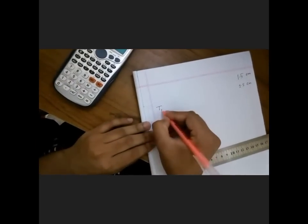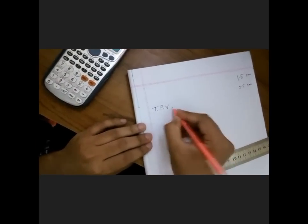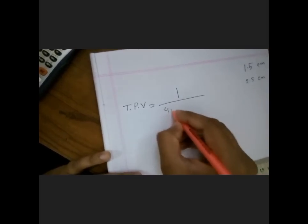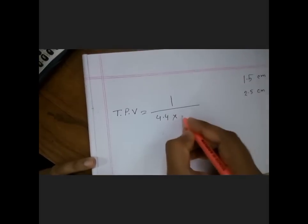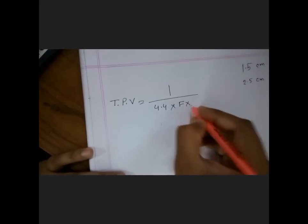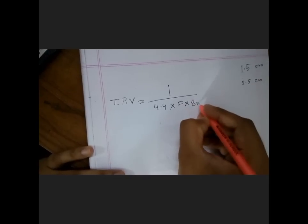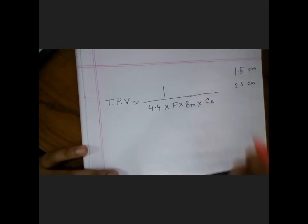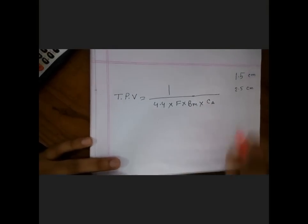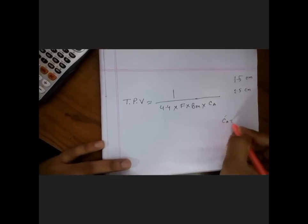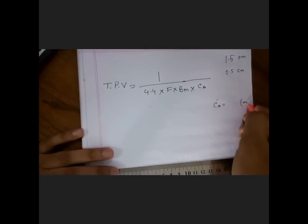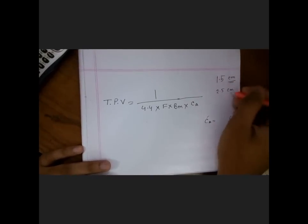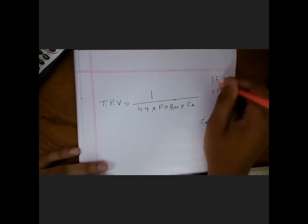And the law is, I'll write here: turns per volt equal to 1 by 4.4 into F into BM into core area. Remember the core area should be taken into meters square. Remember it's meters, but we are taking centimeters, so we should convert this into meter.